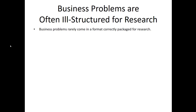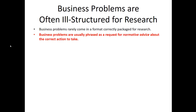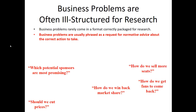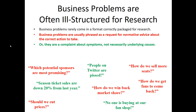Most business problems you'll identify are often, in their proto stage, ill-structured for research. When you're confronted with a business problem, they rarely come pre-packaged for investigation. Managers usually phrase problems as requests for normative advice: what should we do? How do we get our fans to come back? How do we sell more seats? How do we win back market share? Should we cut prices? Another common presentation is a symptom without articulating underlying causes — season ticket sales are down 20%, no one is buying at our fan shop, or people on Twitter are upset about our brand. These are symptoms that don't directly speak to underlying causes.